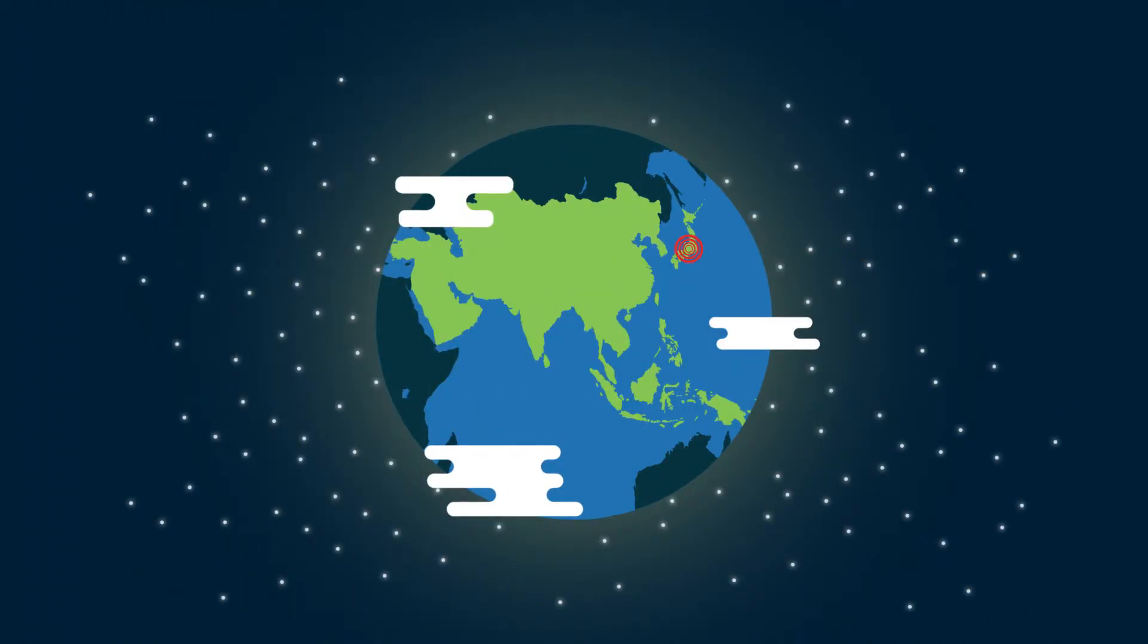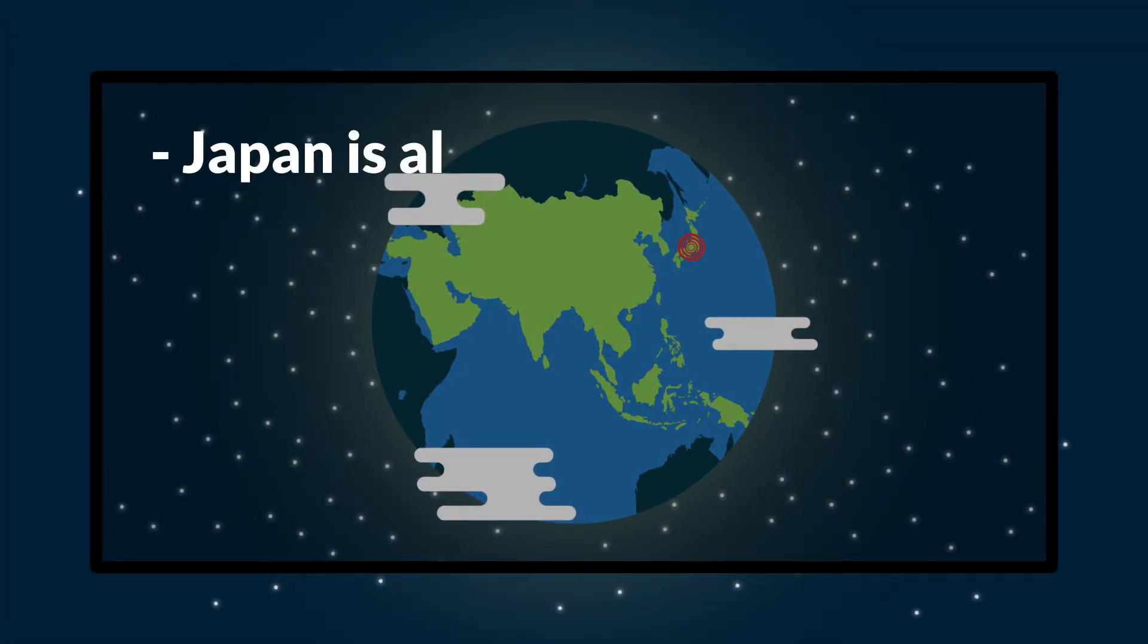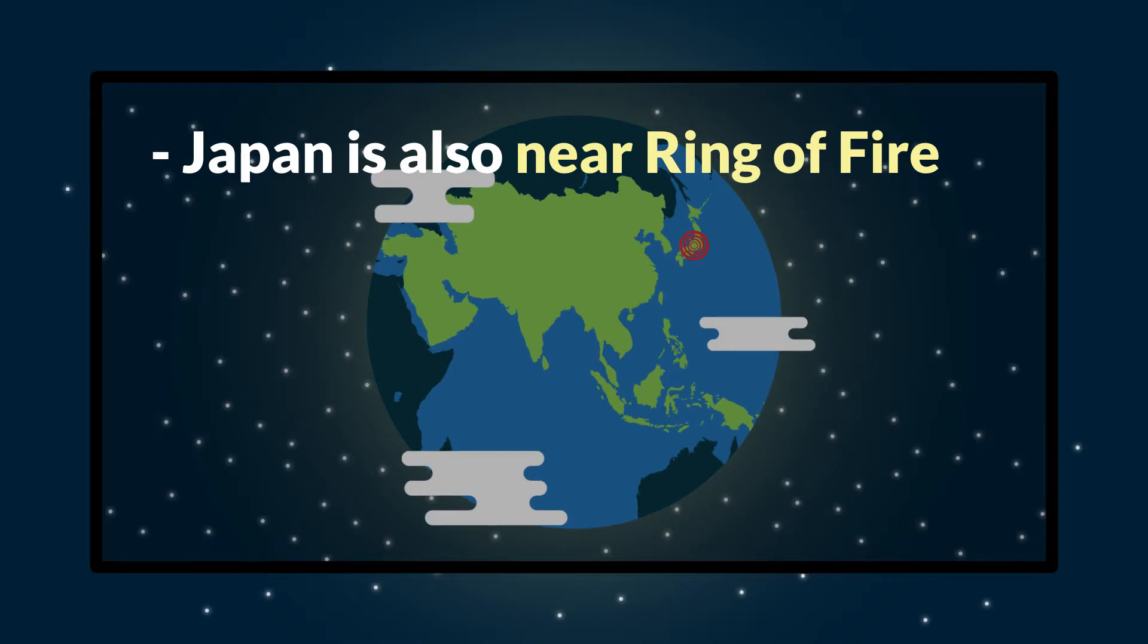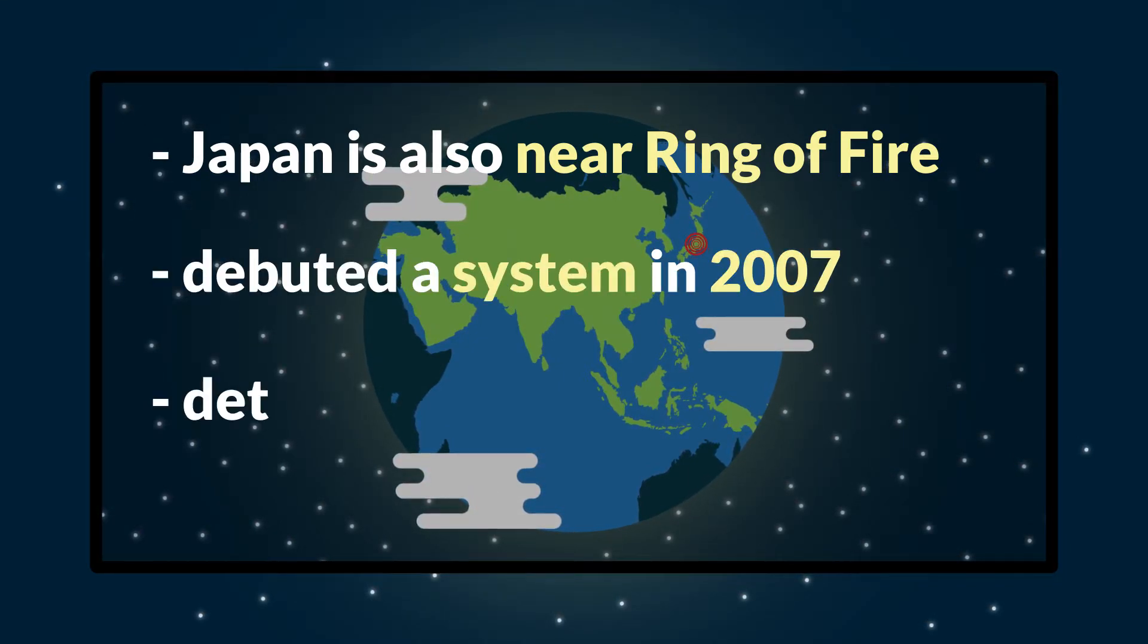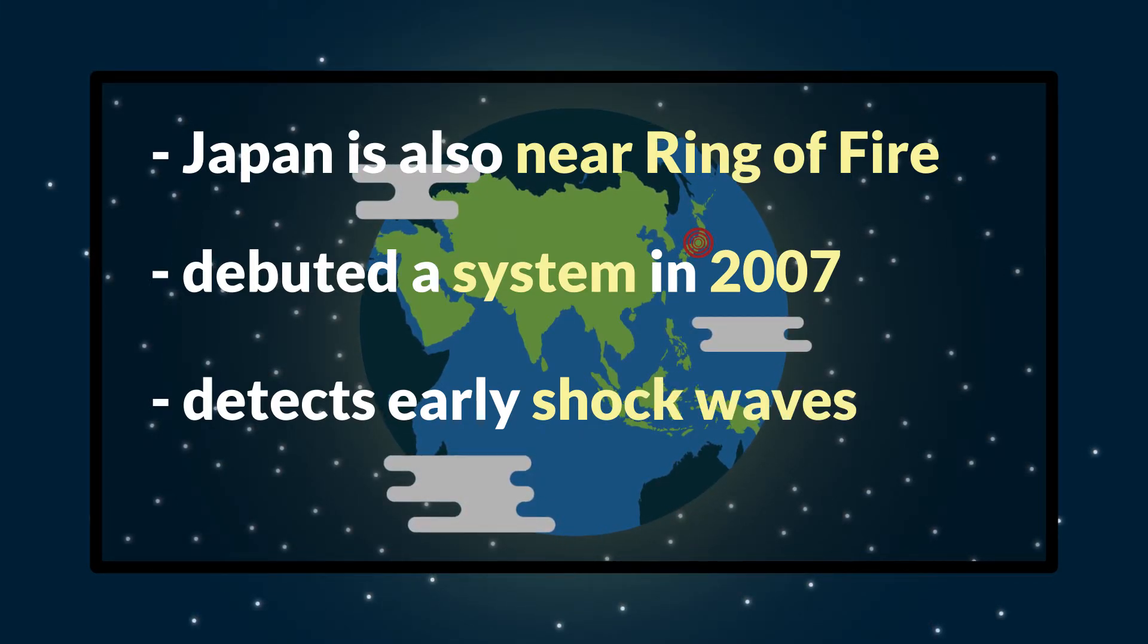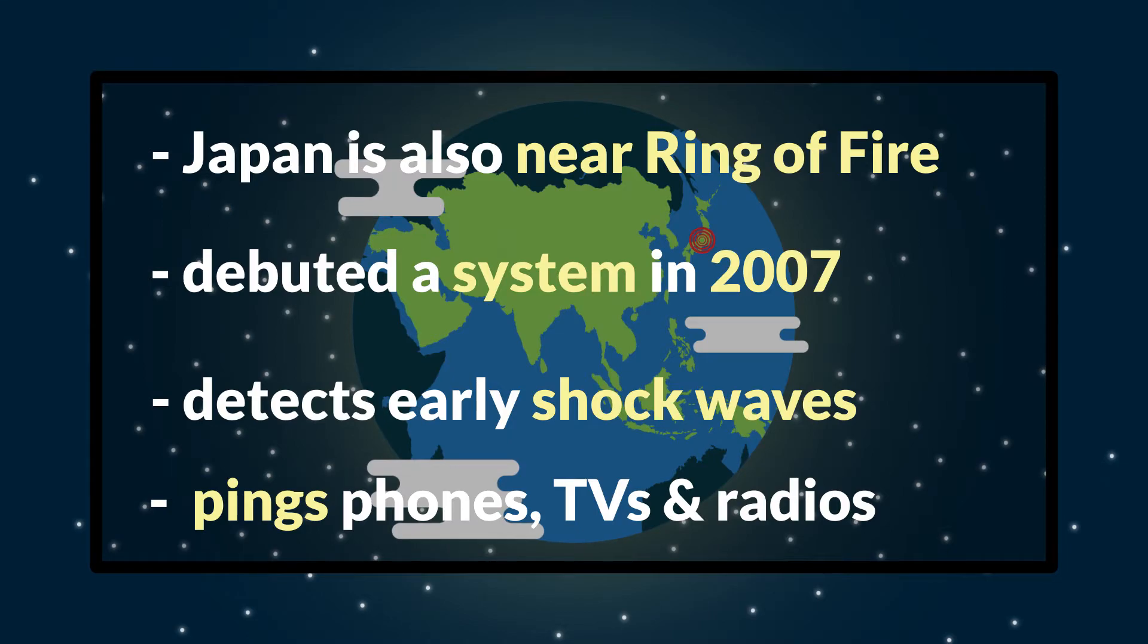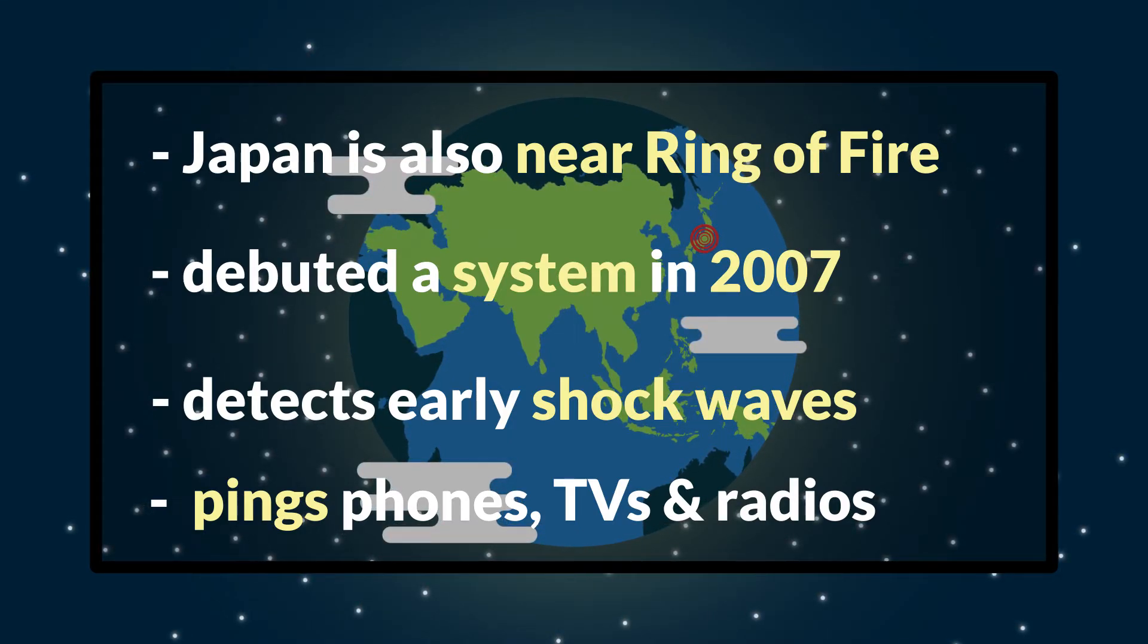Speaking of ring of fire let's round up our list by mentioning Japan. Like Indonesia, Japan is near the ring of fire which makes it highly vulnerable to catastrophic earthquakes. To counter these deadly earthquakes Japan debuted a system in 2007 that detects early shock waves via a network of more than 1000 seismometers around the island nation. The system then pings phones, TVs and radios across the country stopping trains and providing people with a few extra seconds to prepare for the worst.